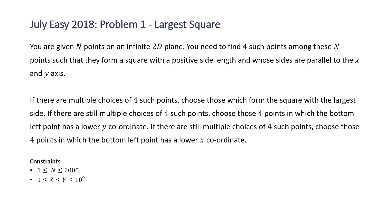The problem states you are given endpoints on an infinite 2D plane. You need to find four such points among these endpoints such that they form a square with a positive side length and whose sides are parallel to the x and y axis. If there are multiple choices of four such points, choose those which form the square with the largest side. If there are still multiple choices, choose those four points in which the bottom left point has a lower y coordinate. And if there are still multiple choices, choose those four points in which the bottom left point has a lower x coordinate.